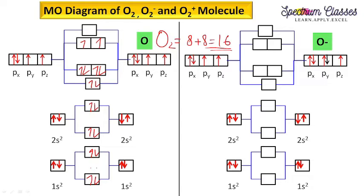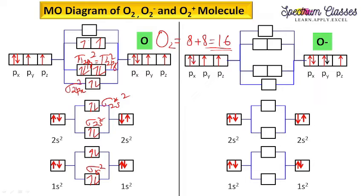Here is how you are going to write the electronic configuration. Sigma 1s: 2 electrons. Sigma star 1s: 2 electrons. Sigma 2s: 2 electrons. Sigma star 2s: 2 electrons. Sigma 2px: 2 electrons. Pi 2py equals pi 2pz: 2 electrons each. Coming to pi star 2py equals pi star 2pz: 1 electron each. This is the electronic configuration, written in the increasing order of energy.